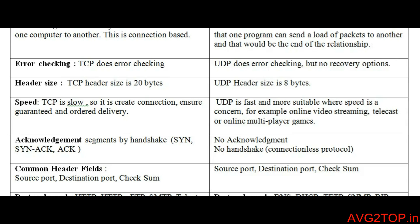Header size: TCP header size is 20 bytes, while UDP header size is 8 bytes.